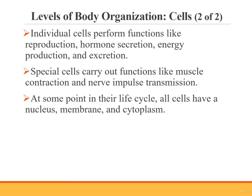Individual cells perform functions for the body like reproduction, hormone secretion, energy production, and excretion. Special cells in the body carry out very specific functions like the contraction of muscle cells and the electrical impulse transmission of nerve cells. The cells in the body come in different shapes and sizes. However, at some point in their life cycle, all cells have a nucleus, a cell membrane, and cytoplasm.